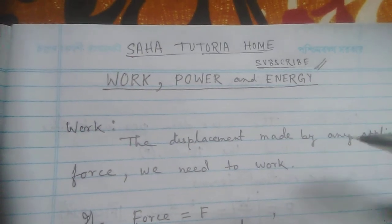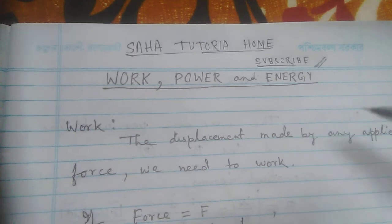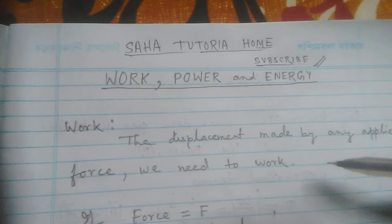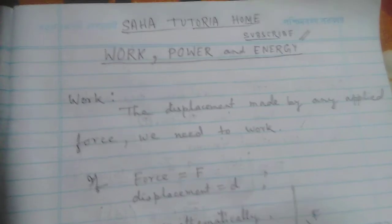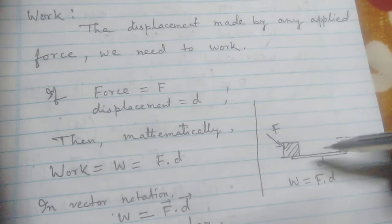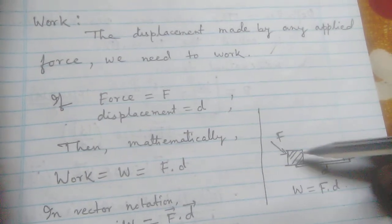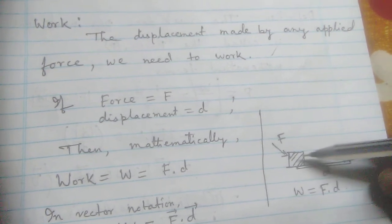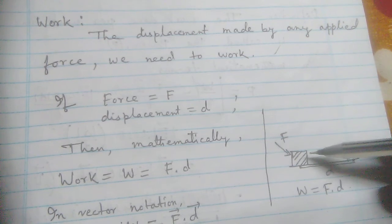Through applying force we need to displace a thing and then we say that we have done work. So how can it be mathematically defined? First look at this picture. Here it is a box and the box mass is not necessary to calculate the work.